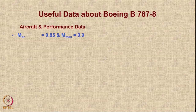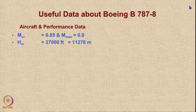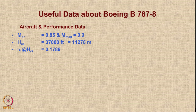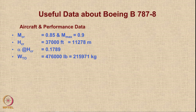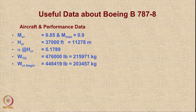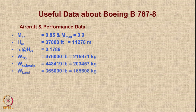This aircraft cruises at a Mach number of 0.85 and the maximum Mach number in cruise is 0.9. The cruising altitude is 37,000 feet, which is 11,278 meters. The thrust lapse ratio alpha at cruising altitude is 0.1789 — this information is not readily available and has been obtained by looking at specific Boeing 787 data. The maximum takeoff mass is 476,000 pounds, which converts to 215,971 kilograms.